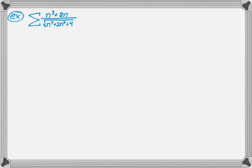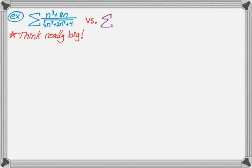Here we have the sum of (n³ + 8n) over the square root of (n⁷ + 2n² + 4). This does feel like a p-series where stuff got added onto the dominant terms. Thinking about n going to infinity, I only care about dominant terms. In the numerator n³ dwarfs 8n, so I'm really just thinking n³. In the denominator, n⁷ is so much bigger than everything else that I can ignore the rest.